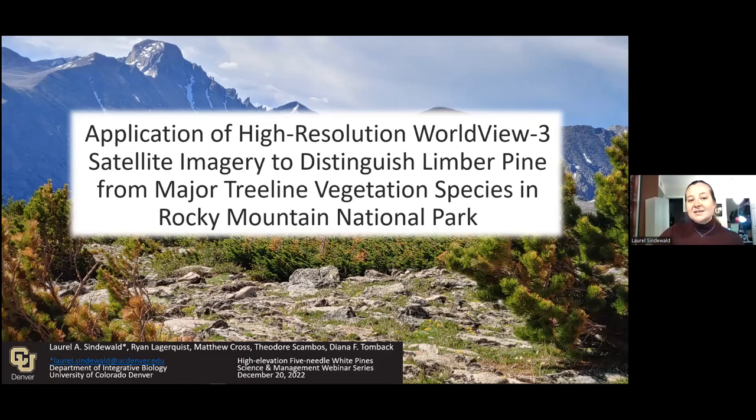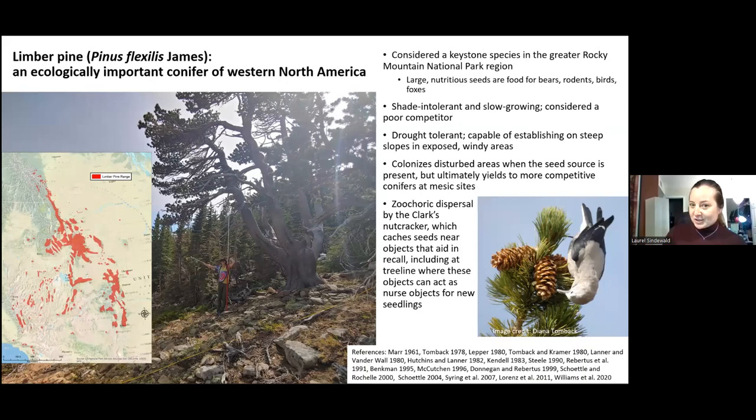Today I'm focused on a closely related conifer that's found a little further south, limber pine, and how we can use remote sensing technologies to estimate its distribution in remote or hard to reach places such as treeline in Rocky Mountain National Park. Limber pine is considered to be a keystone species in Rocky Mountain National Park due to its periodic production of prodigious quantities of nutritionally dense seeds that feed diverse wildlife. It is shade intolerant and slow growing and therefore considered to be a poor competitor. However, it is a drought tolerant and wind tolerant species and can establish on steep slopes in exposed and windy areas where more moisture-limited conifers may struggle. Limber pine is also dispersed by the Clark's Nutcracker, which has been documented traveling up to 32 kilometers before caching harvested seeds. Likely as a result of this behavior, limber pine's distribution in Rocky Mountain National Park and range-wide is patchy and has a metapopulation structure.